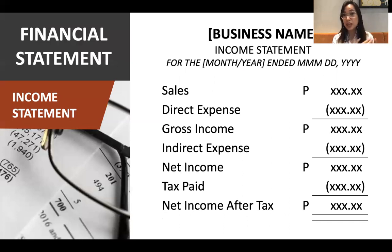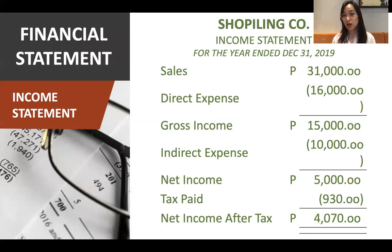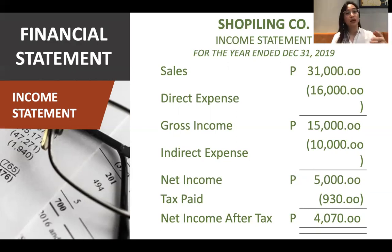VAT is usually passed on to customers. Here's an example: if sales are 31,000 pesos and direct expenses are 16,000 pesos, gross income is 15,000. Minus indirect expenses of 5,000 pesos (salaries, water, electric bill) and then minus taxes — that gives you approximately 4,700 pesos net income. This is the most basic financial statement for a business: to see if there are sales and if costs are being covered.